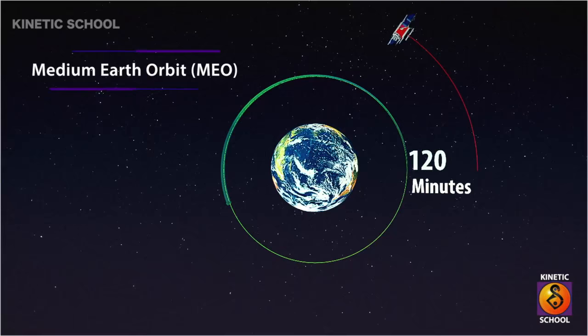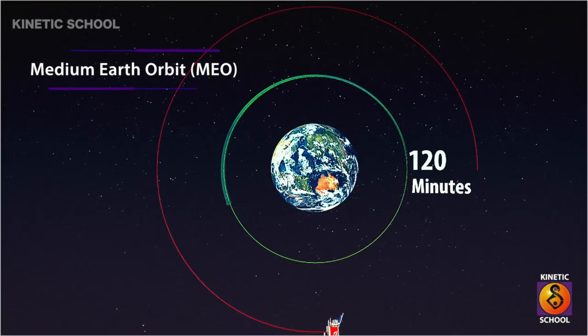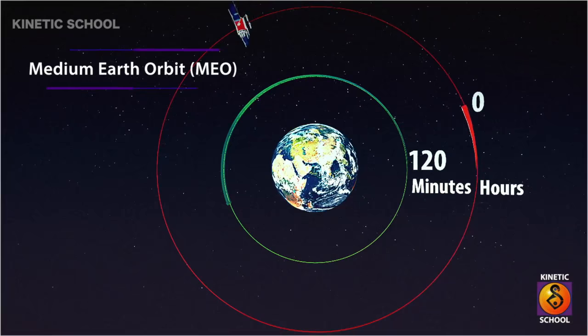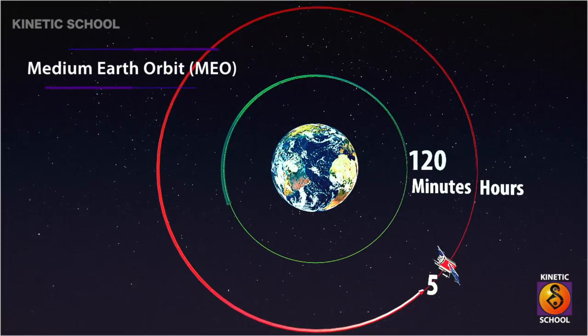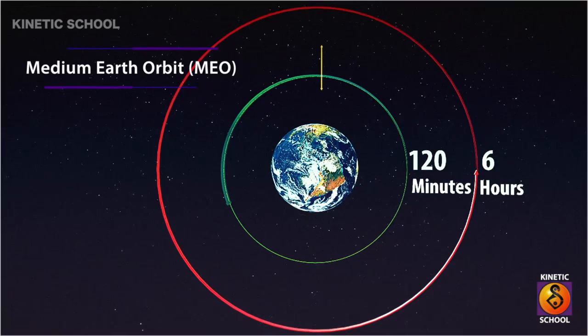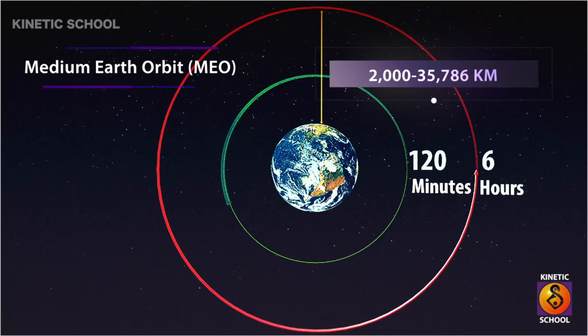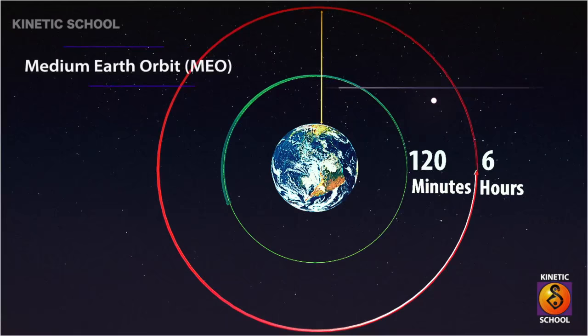Medium Earth Orbit is the region of space around the Earth above low Earth orbit and below geostationary orbit. The orbital periods of Medium Earth Orbit satellites range from about 2 to 6 hours, and these satellites operate at altitudes between 2,000 kilometers and 35,786 kilometers above the Earth's surface.